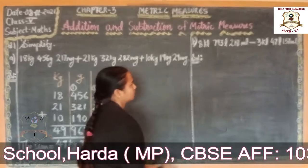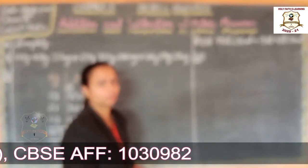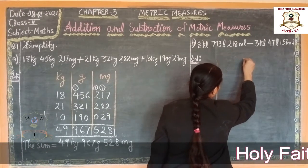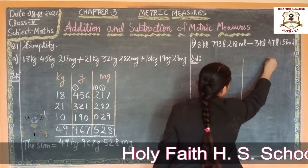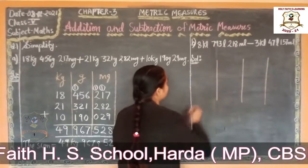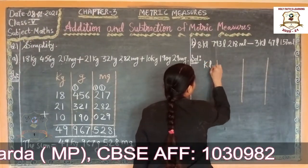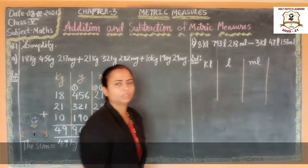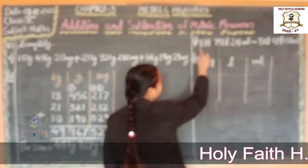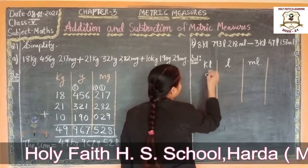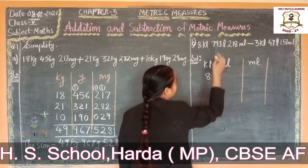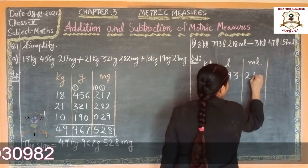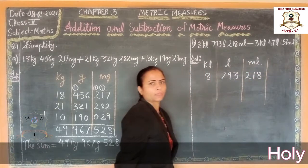Now subtract. First we draw column, 3 columns for kilolitre, litre, and millilitre. First right over here: kilolitre, then litre, then millilitre. Now, what is the number in column? 8 kilolitre, we write it here. 793 litre, we write 793 in litre column. 280 millilitre in millilitre column.